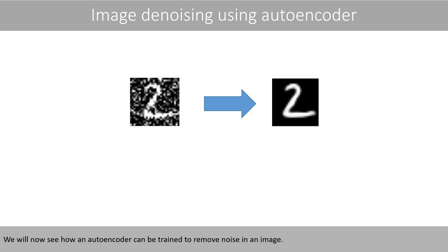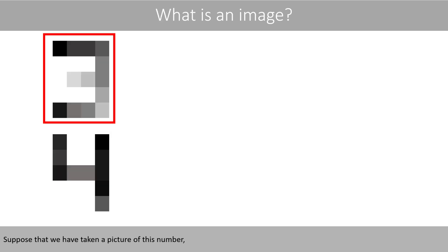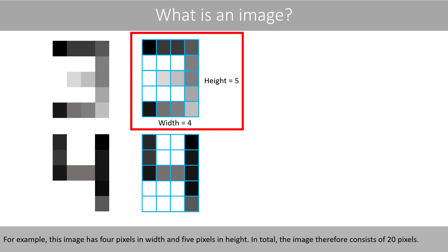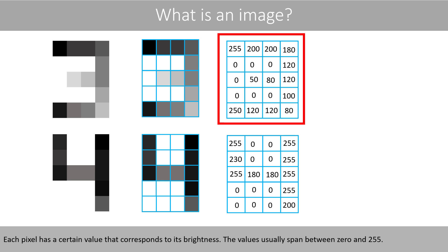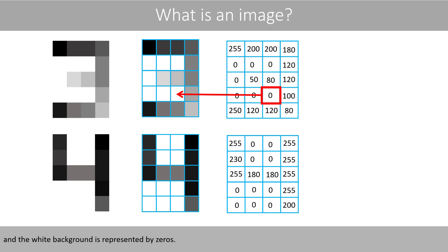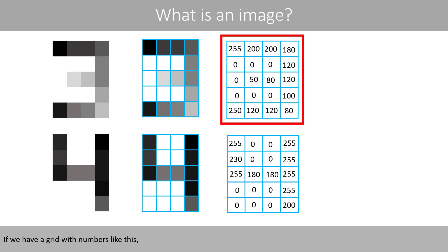We'll now see how an autoencoder can be trained to remove noise in an image. Suppose that we have taken a picture of this number, and the picture of this number. An image consists of a grid of pixels. For example, this image has 4 pixels in width and 5 pixels in height, so in total the image consists of 20 pixels. Each pixel has a certain value that corresponds to its brightness. The values usually span between 0 and 255. In this example, high numbers represent a black color, whereas low numbers represent a gray color, and the white background is represented by zeros.